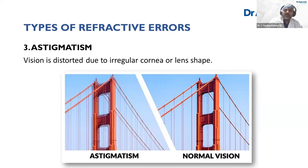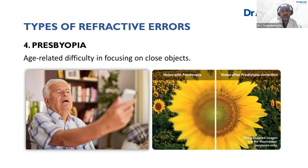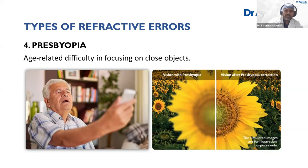The fourth type is presbyopia, and this is something everybody has to go through. It is an age-related change within the eye — an age-related difficulty in focusing on near objects. This usually happens after the age of 40. You may have seen people wearing reading glasses after 40-42, or holding things a bit farther from their eyes to see clearly. That condition is known as presbyopia. So these are the four basic types of refractive errors.